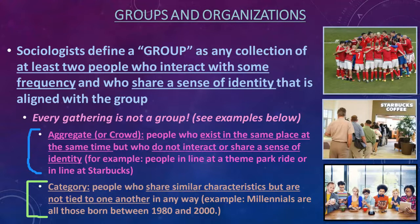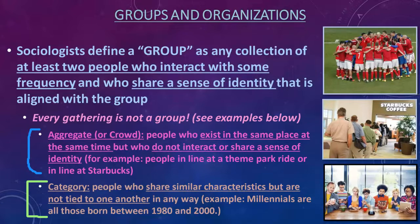For example, when we talk about generations — the Boomers, Gen Z, and Millennials — the similar characteristics they share are that they were born within a certain time span. Millennials are born somewhere between 1980 and 2000. But beyond that, this category of millennials contains all sorts of different types of people. Just because they were born in the same decade doesn't mean they share a lot; there's probably a whole lot of differences between them as well.